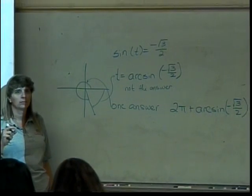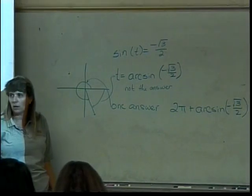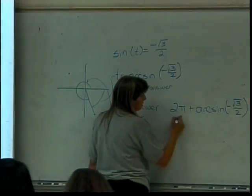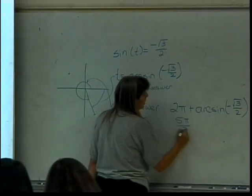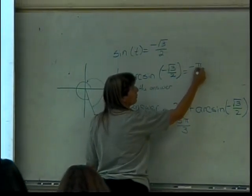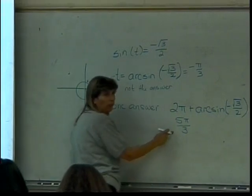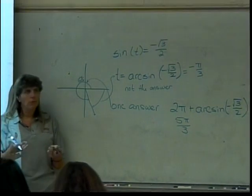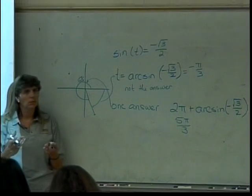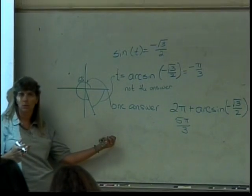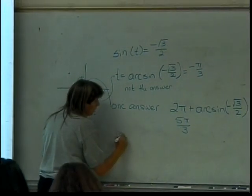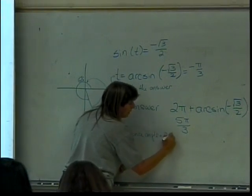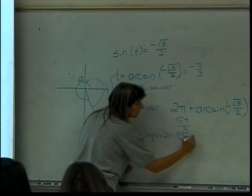Would this be easier if we had a number for the arc sine of negative square root of 3 over 2? Anybody know that number? 5π over 3. Everybody like that one? So, this turns out to be 5π over 3. Because this answer right here was negative π over 3. So, when I add 2π to it, I end up at 5π over 3. So, what's the reference angle here? How do I find reference angles in quadrant 4? 2π minus the angle. So, the reference angle is equal to 2π minus 5π over 3, which is going to be π over 3.